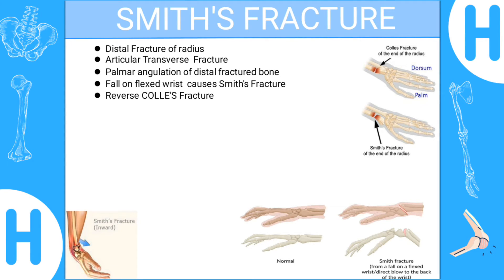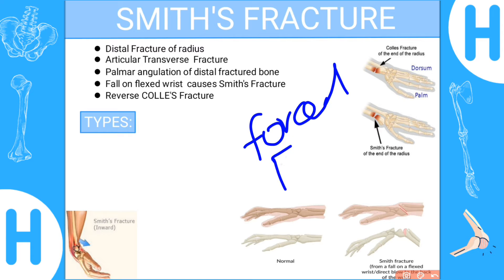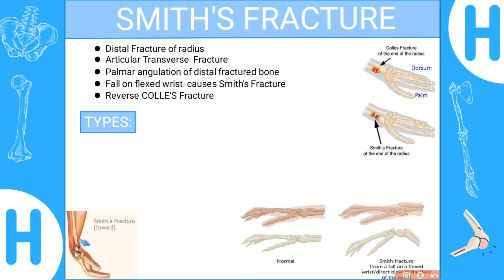Smith's fracture is basically an inward fracture, while Colles' fracture is an outward fracture. Smith's fracture is exactly the reverse of Colles' fracture. It occurs due to a fall on a flexed wrist, whereas forced extension of the hand leads to a Colles' fracture. That is the key difference between the two.